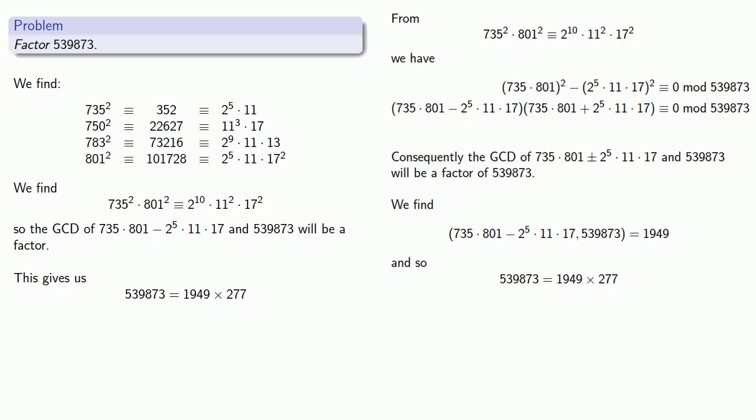So again, with a handy time machine, we can know that we only need these four numbers to find the factorization. Of course, if you don't have a time machine, then we'll have to keep going until we find a factorization.